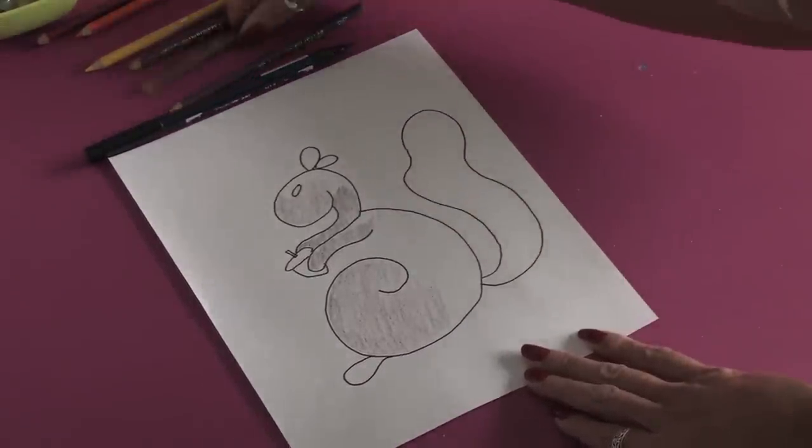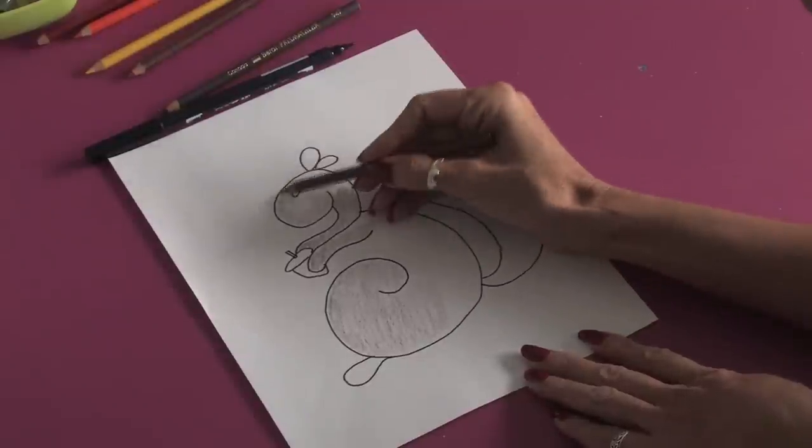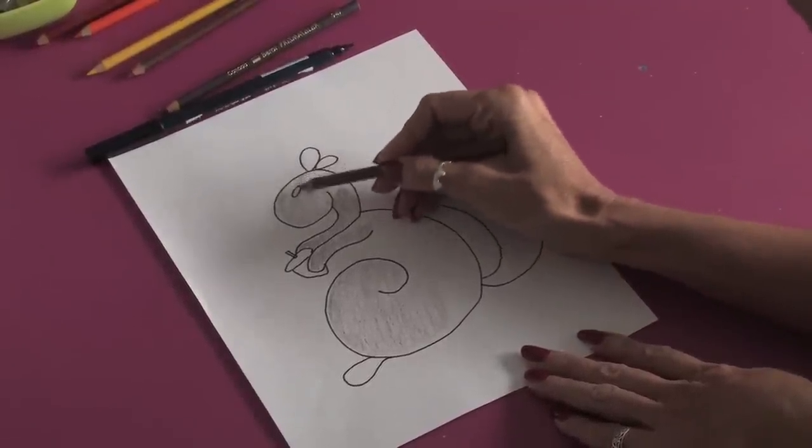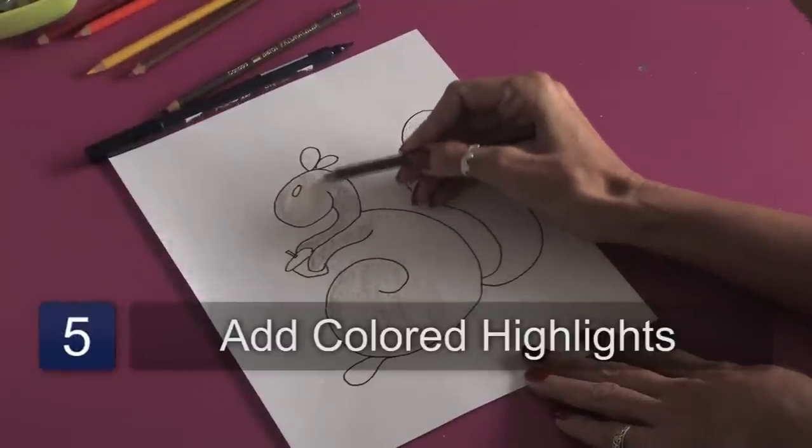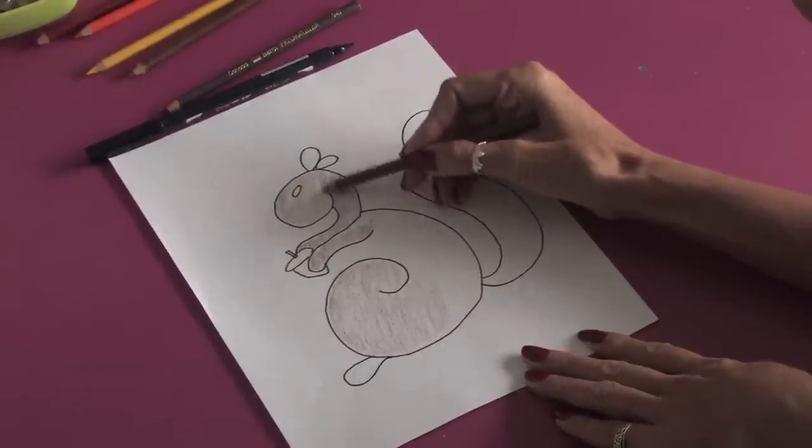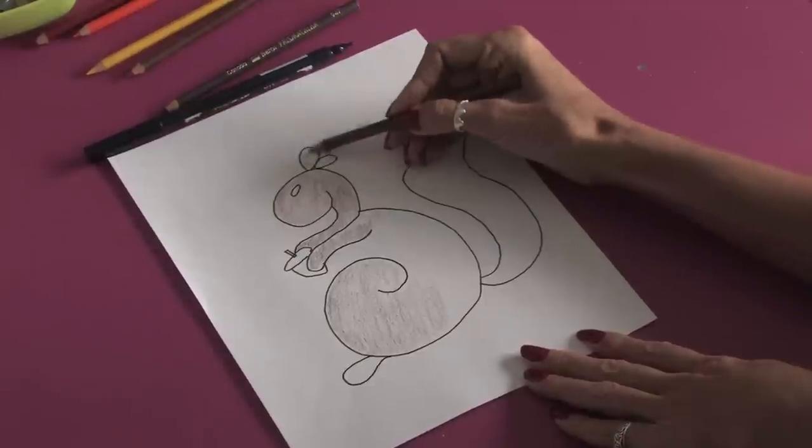Now I'm going to take a lighter brown pencil and start highlighting at the top of the head where the light would be hitting the squirrel. Just like this.